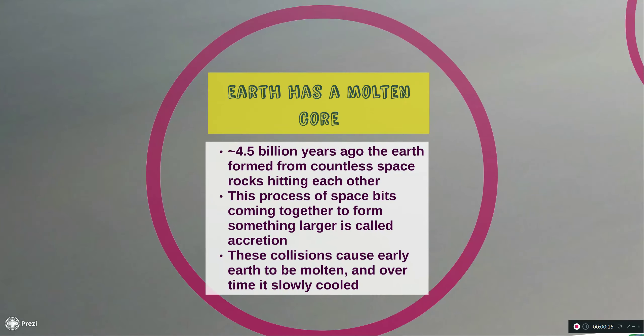The early solar system was little more than just space dust floating around and circling an early proto-sun. Over time this space dust slowly collided into other space dust, forming balls or proto-planets that eventually grew big enough to be actual planets. This process of little space bits colliding and forming bigger space bits is called accretion. An easy way to think of accretion is to think of a snowball rolling down a hill — as it collides with little bits of snow it grows bigger and bigger.